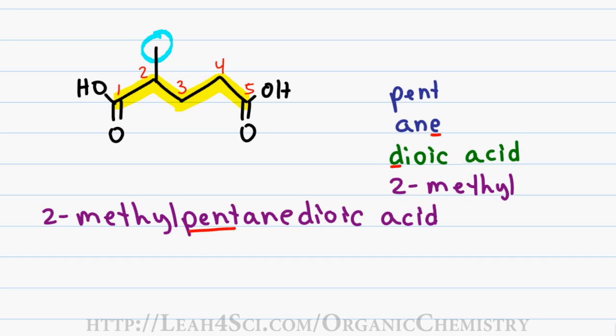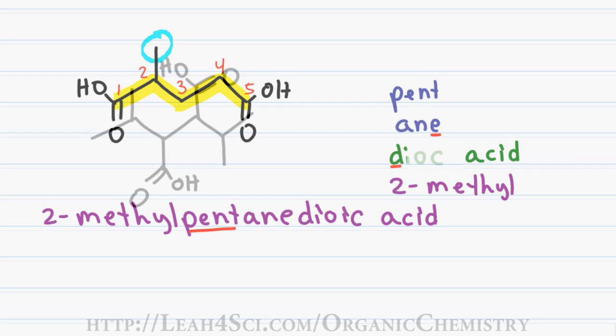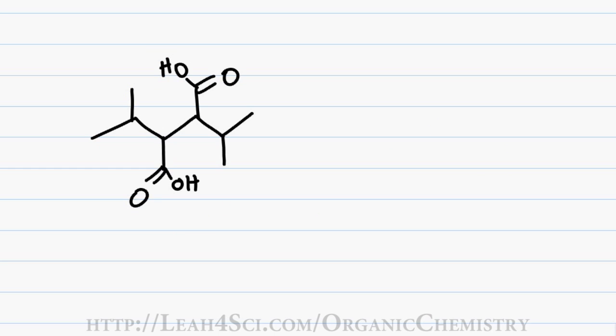This concept becomes even more evident when I have a tricky example like this one. My longest carbon chain does indeed have 6 carbons; however, this is not my parent chain. Because the carboxylic acid is such a high priority group, it doesn't matter how many carbons are in the chain as long as you are able to connect carboxyl number 1 and carboxyl number 2 to make your parent chain.